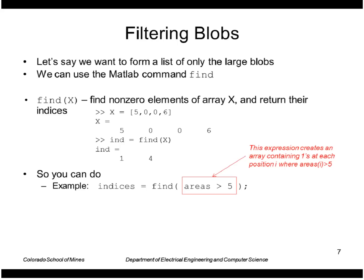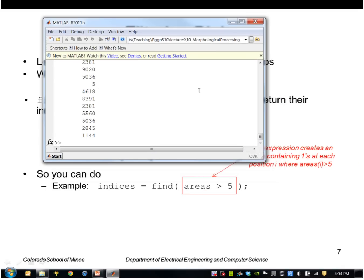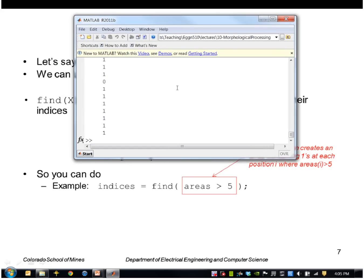So what I can do then is apply that to my areas, my list of areas. So this expression here areas greater than five does a test on each element of areas. Let me just type that. And it returns true or one for all the areas that are greater than five. So that's true for all of these here except as you can see for that one.